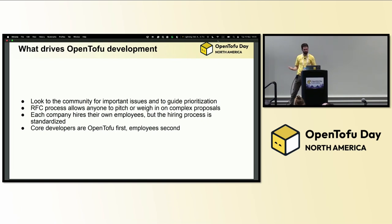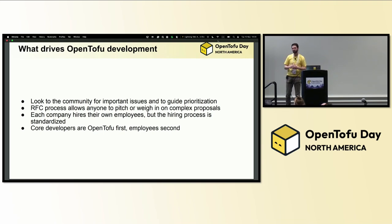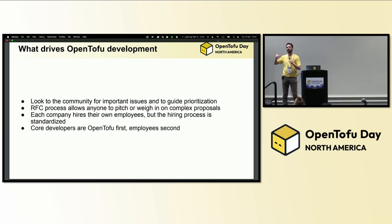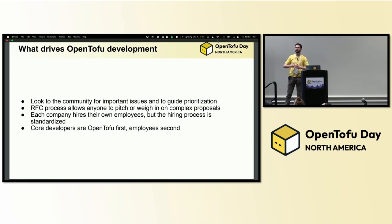On a more practical level, we have an RFC process in place. Whenever we're talking about a large feature that requires a lot of discussion — it shouldn't just be one person or a couple people in the core team figuring it out. We have a process where on a pull request, the whole community gets to weigh in on exactly what's going on, how the feature is going to be built, how it's going to be used as an end user, and how it impacts both individuals and companies. It is an open process — open discussion.